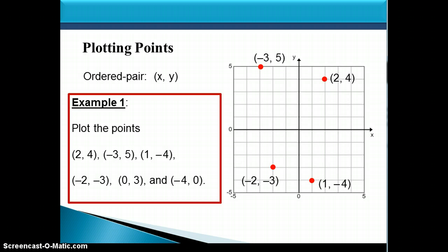Our next point is (-2, -3), so we start at the origin and go left 2 and down 3. The last two points are special because they have zeros as coordinates. If the first coordinate is 0, we don't go left or right — we stay on the y-axis. With a second coordinate of 3, we go up 3 units on the y-axis. Our last point, (-4, 0), tells us to go left 4, and because the y-coordinate is 0, we do not go up or down — we stay right on the x-axis.